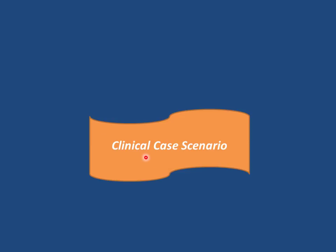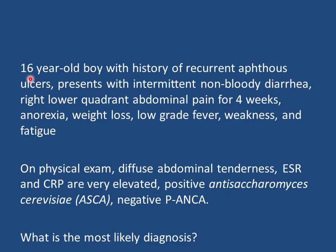Clinical case: a 16-year-old boy with history of recurrent aphthous ulcers (recurrent oral ulcers) presents with intermittent non-bloody diarrhea, right lower quadrant abdominal pain for four weeks, anorexia, weight loss, low-grade fever, weakness, and fatigue. Exam: diffuse abdominal tenderness. ESR and CRP very elevated. Anti-Saccharomyces cerevisiae (ASCA) positive, p-ANCA negative. Keywords: recurrent oral ulcers, chronicity, weight loss, elevated inflammatory markers, positive ASCA, negative p-ANCA — most likely diagnosis is Crohn disease.